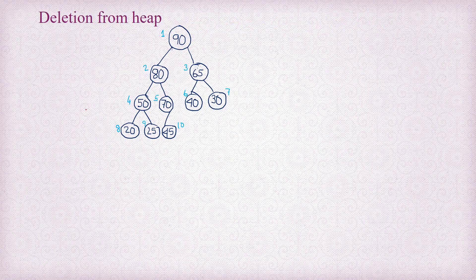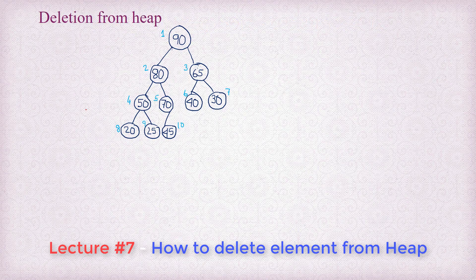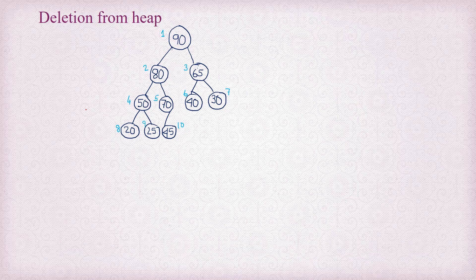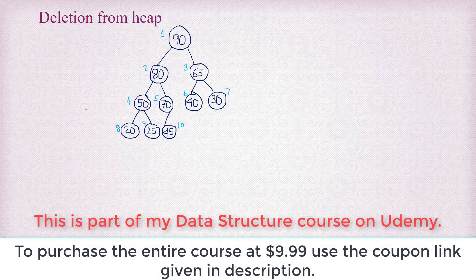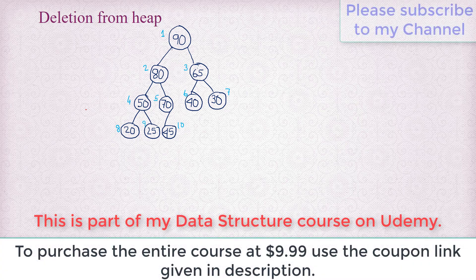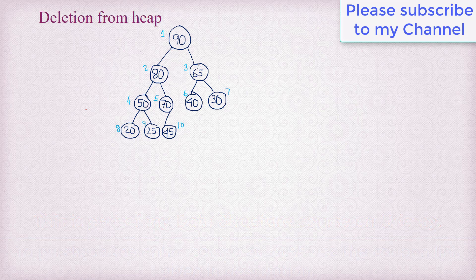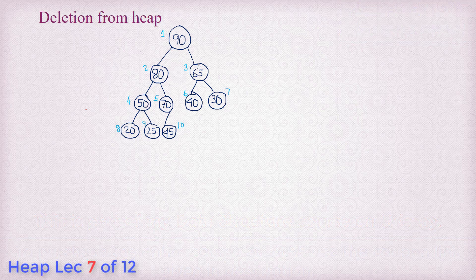Hello and welcome back. It's time to understand how we can delete an element from a heap. When we delete an element from a heap, it's always the root element that gets deleted. So if it is a max heap, we always get the largest number from the heap on deletion, and if it is a min heap, we always get the minimum or smallest number from the heap after the deletion.